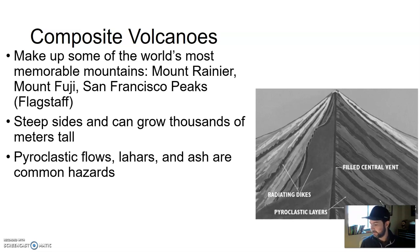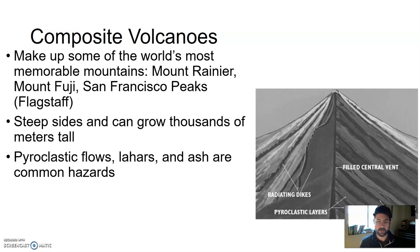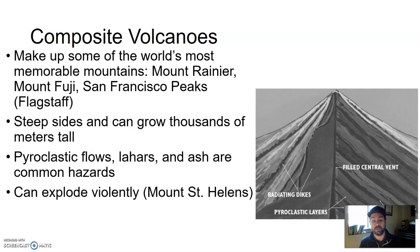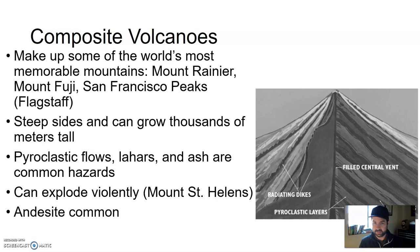A lahar is a mix of pyroclastic tephra with water — especially if there's ice or snow on a mountain peak, the eruption melts that material. You get water mixed with rock material, forming this slushy mudflow that races down the side of a volcano — that's what a lahar is. Those are common at these types of volcanoes, as well as a lot of ash but typically no lava at a composite volcano — more of an explosive event, like Mount St. Helens was. Andesite, an intermediate extrusive igneous rock, is common at these composite volcanoes.